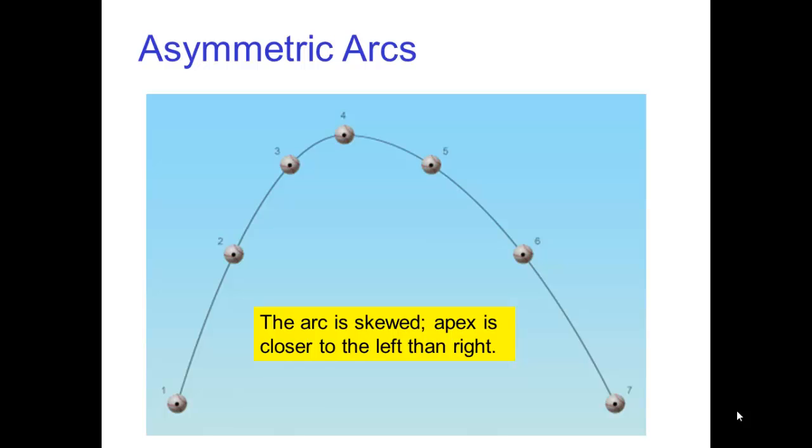Another common error is to skew the arc so that it is steeper on one side than the other. This is most commonly seen when animating by straight-ahead action if the animator discovers that the arc is going to fall short of the desired landing spot.